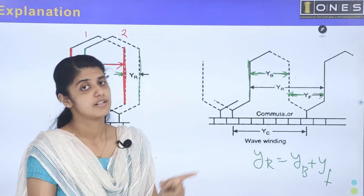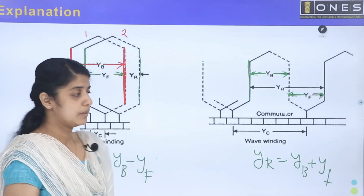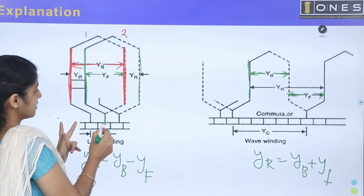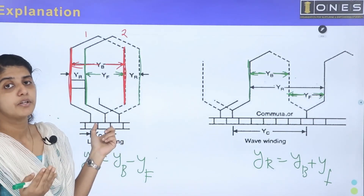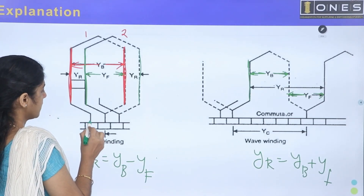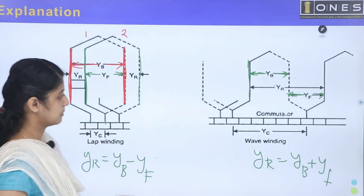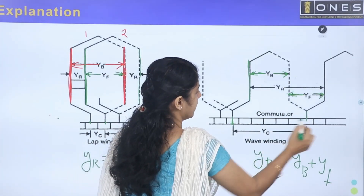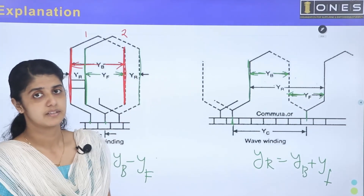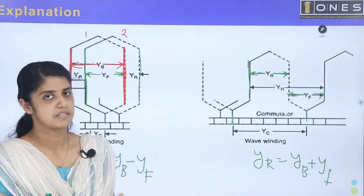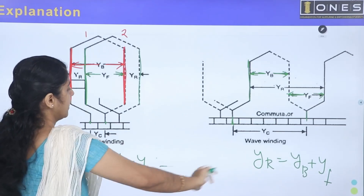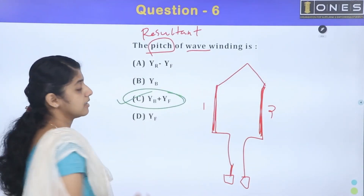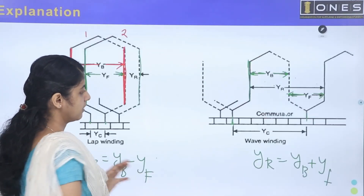What is the resultant pitch in wave winding? The answer is yb plus yf. The commutator pitch involves the second coil starting at the middle commutator segment — it is the same commutator pitch, expressed in terms of the number of commutator segments. So the pitch of wave winding is yb plus yf.